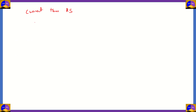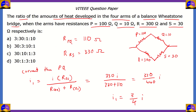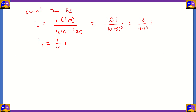Now let's look at the current passing through RS using a similar approach. I2, the current through RS, equals the total current times the resistance of PQ divided by the sum of the two resistances: R of PQ plus R of RS. So it equals 110I divided by 110 plus 330, which is 110 over 440 times I. That means I2 equals 1/4 of I.